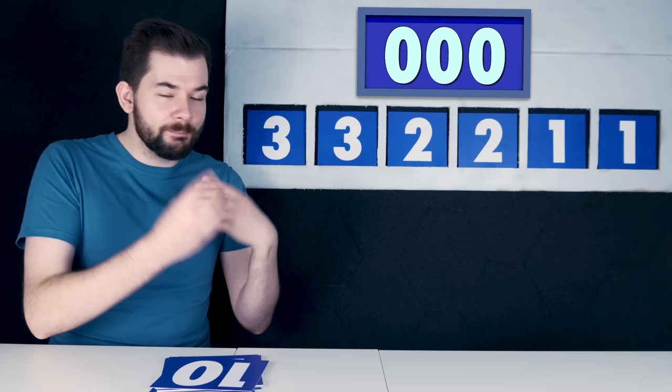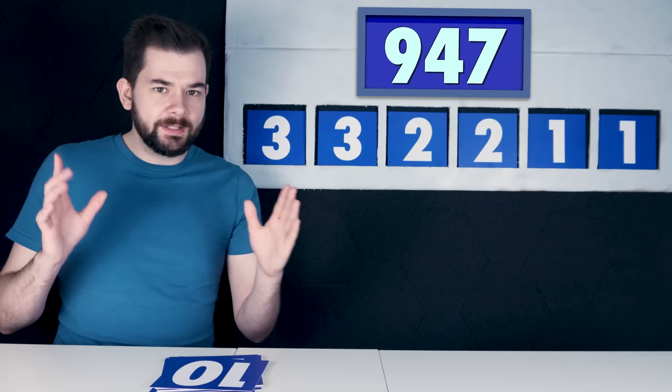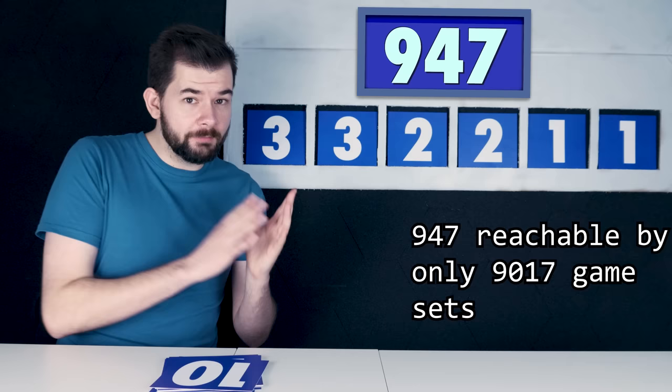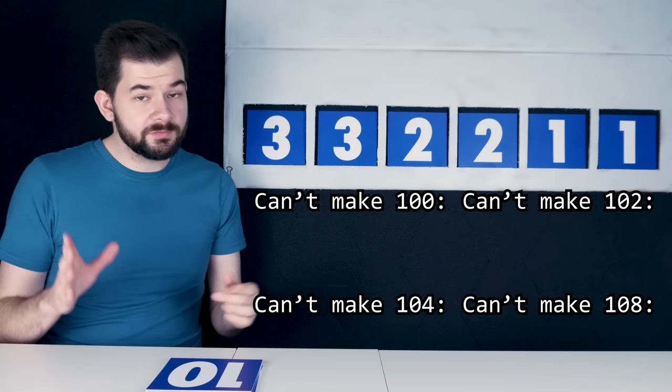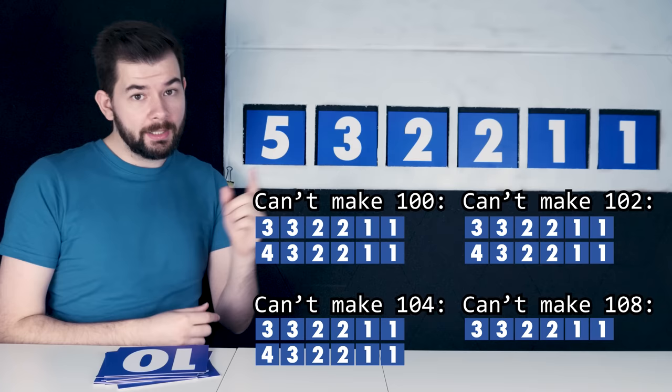So are all targets reachable? Yes. Given any target number, there exist many, many game sets which can reach that target. In fact, 1,226 game sets can reach any target. That's about 9% of the total number of game sets. Which target number is the most difficult to reach? An argument can be made for 947, which is reachable by only 9,017 of the total possible game sets, the fewest of any target number. But even that is about three quarters of all the possible game sets. As for which targets are easiest, the numbers 100, 102, 104 and 108 can all be reached by all but three of the game sets. Only these ridiculously unlucky sets can't make those targets. This truly pathetic set of numbers here can't make any targets, so of course it can't make those four numbers. Its slightly less useless older sibling, 4,3,2,2,1, can't make these three targets. And its even less useless cousin, 5,3,2,2,1, can't make these two targets.